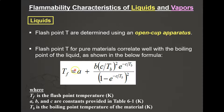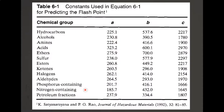Remember that all temperatures in the equation must be in Kelvin. The constants A, B, and C are provided in Table 6.1, which lists all the constants used in the flashpoint–boiling point correlation equation.